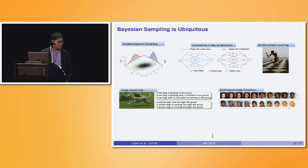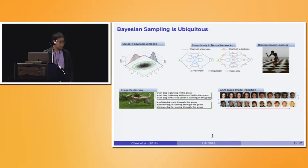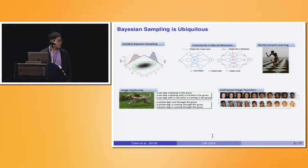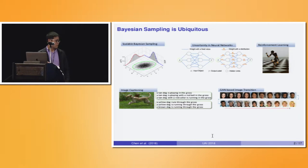Bayesian sampling is ubiquitous in machine learning nowadays, especially in deep learning. There has been a number of applications in deep neural networks — for example, we can use Bayesian sampling to model uncertainties, and there has also been work applying sampling in deep generative models and deep reinforcement learning.